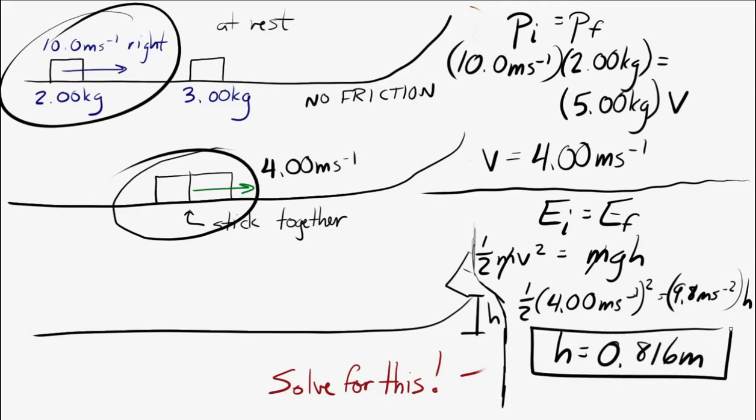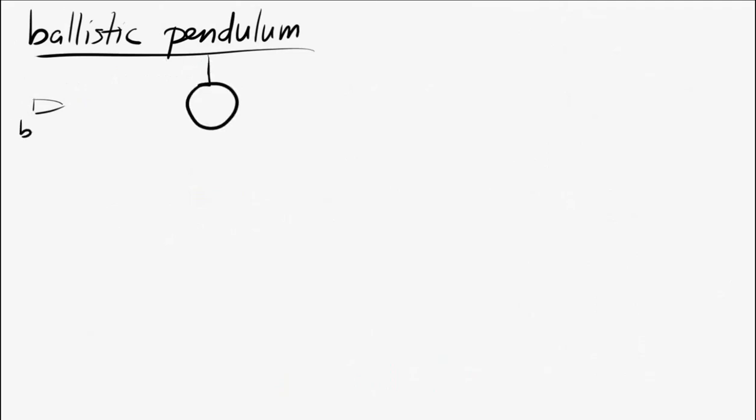And this example is often called a ballistic pendulum. It's an effective way for measuring the velocities of bullets, but let's not worry about that right now. Let's say we have a bullet, and it's headed toward a pendulum made out of clay.